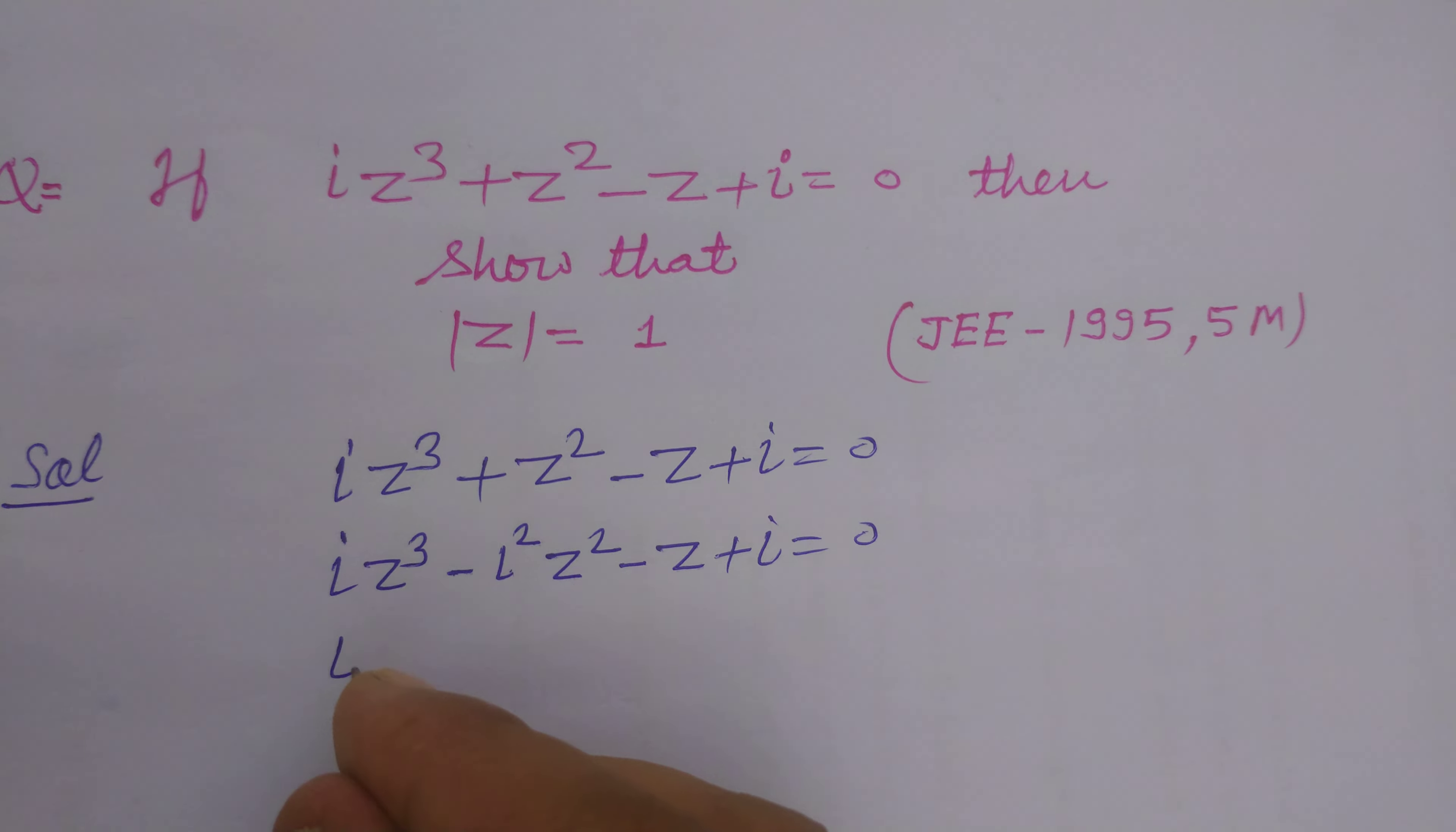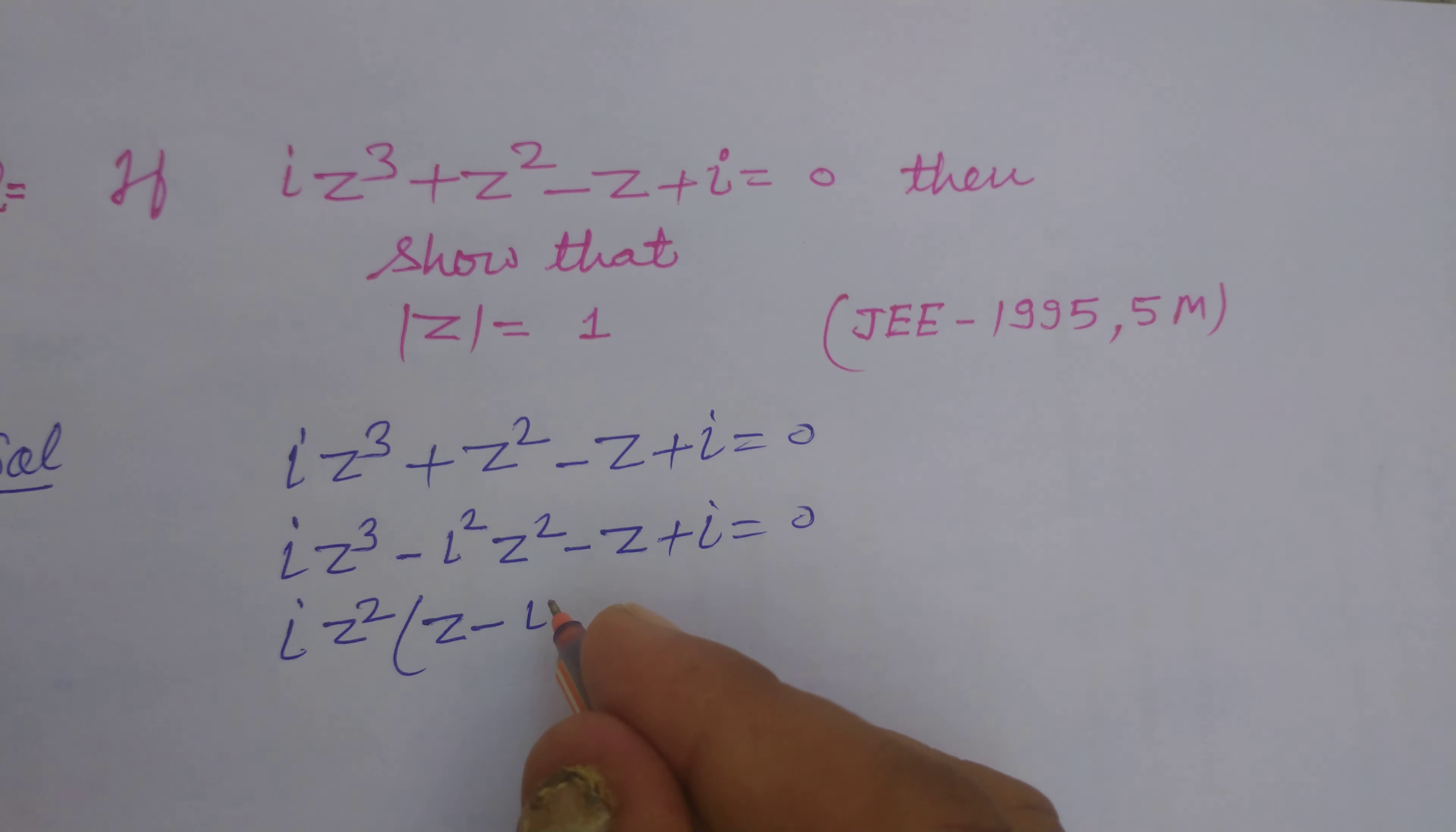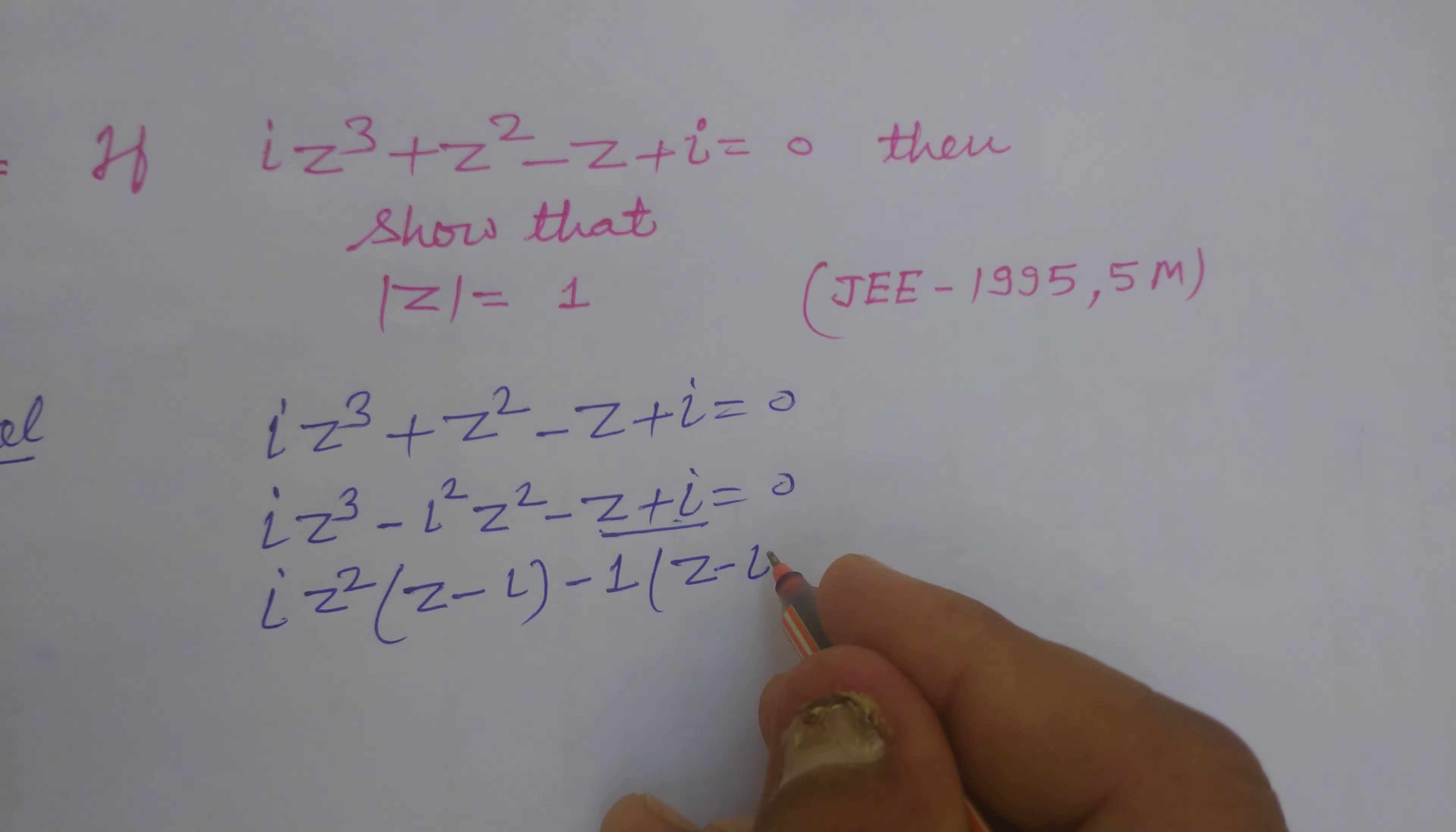Now we take common iota z squared from this. So we get z minus iota, and minus 1 common from these two terms. So z minus iota.